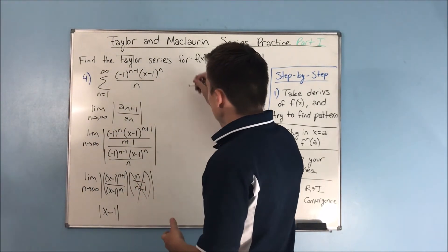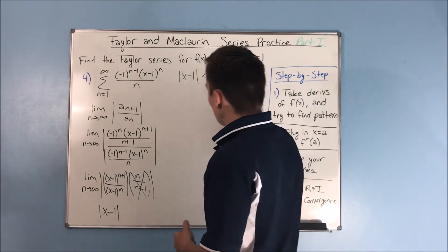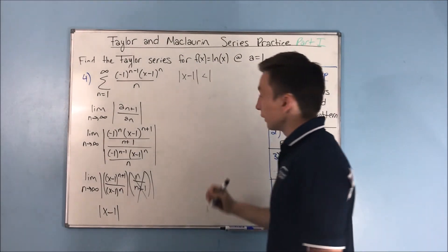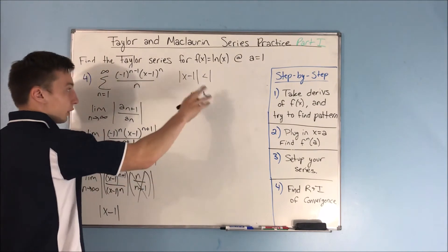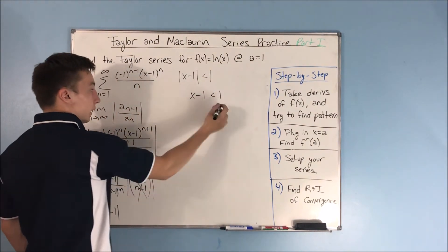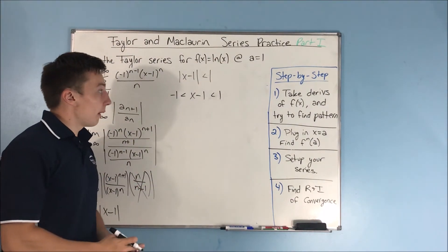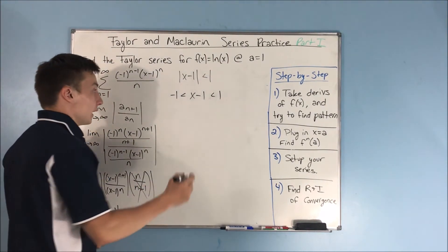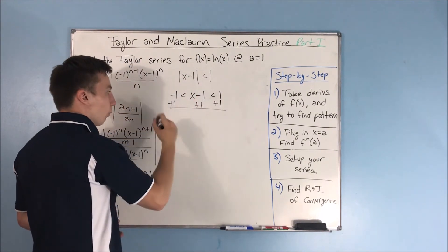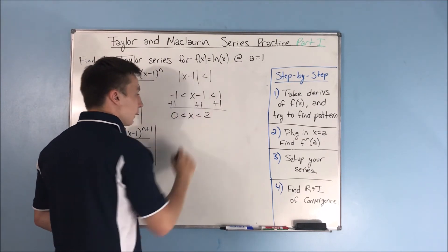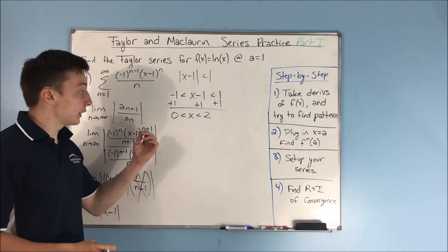The ratio test tells us that the absolute value of x minus 1 needs to be less than 1 for this to converge. Using that absolute value, we get that x minus 1 is between negative 1 and 1. Adding 1 to each side, that gives us that x needs to be between 0 and 2. So now you have your interval — from 0 to 2.